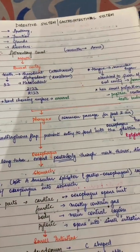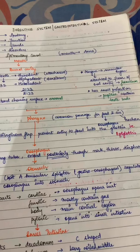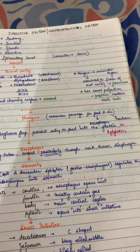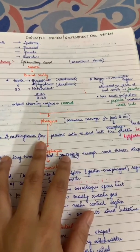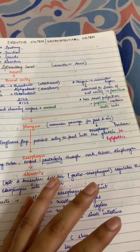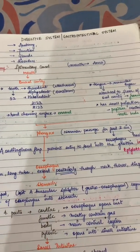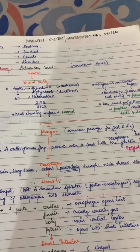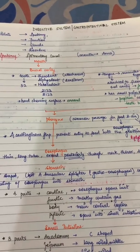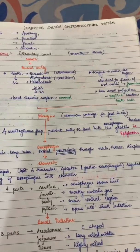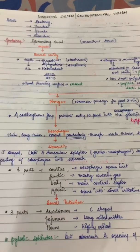After the mouth, we have the pharynx, which is the common passage for food and air — the esophagus and trachea both open into the pharynx. There is a cartilaginous flap called the epiglottis that prevents entry of food into the glottis. When we eat, the epiglottis covers the windpipe so food from the pharynx goes directly into the esophagus.